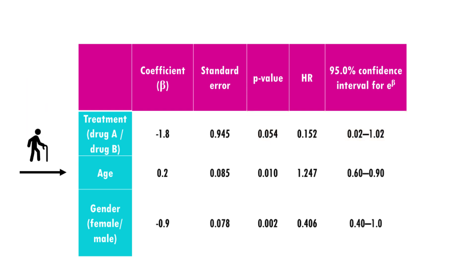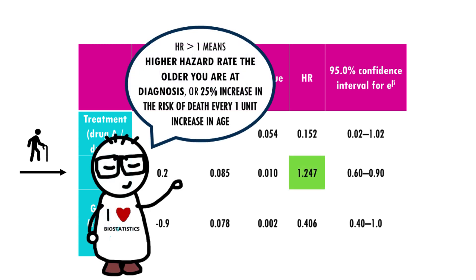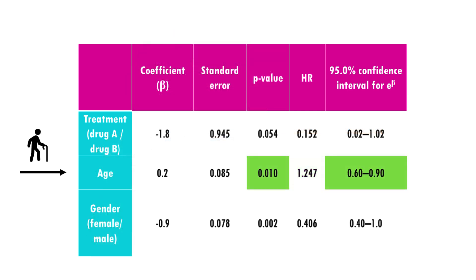Moving on to age: the hazard ratio for age is 1.25, which indicates that a patient who is one year older than another patient — given the same treatment and gender — has an increased risk of dying by a factor of 1.25. Note that in this case, the confidence interval does not contain 1, indicating statistical significance for age.